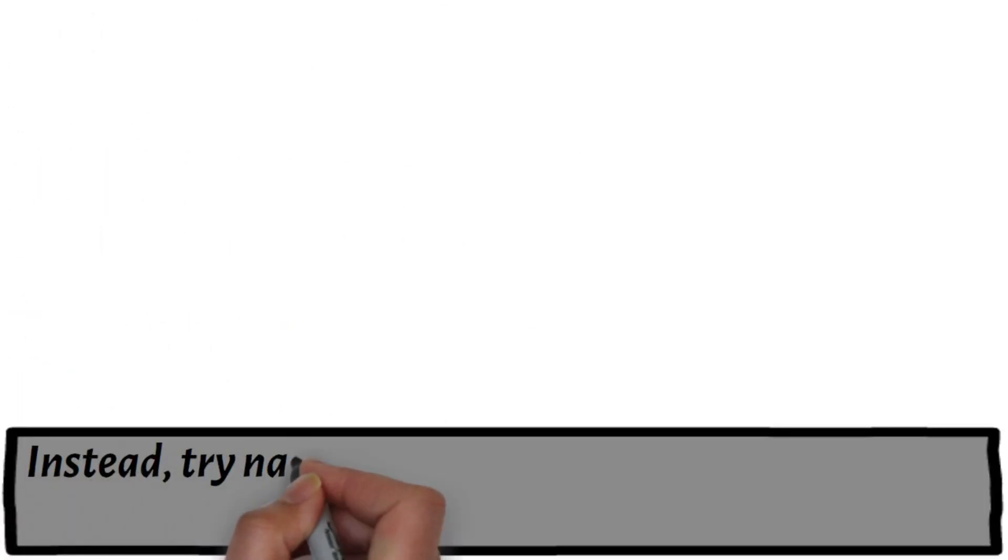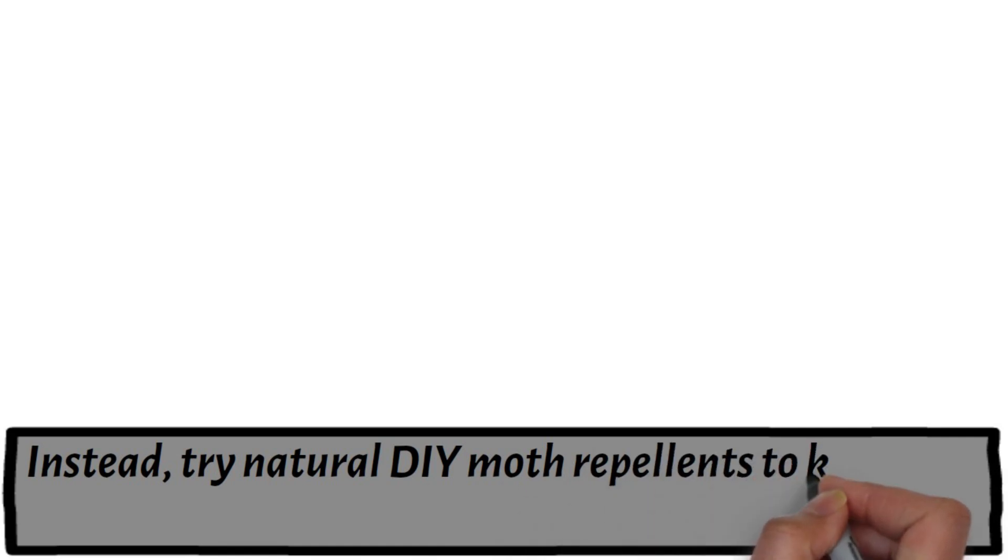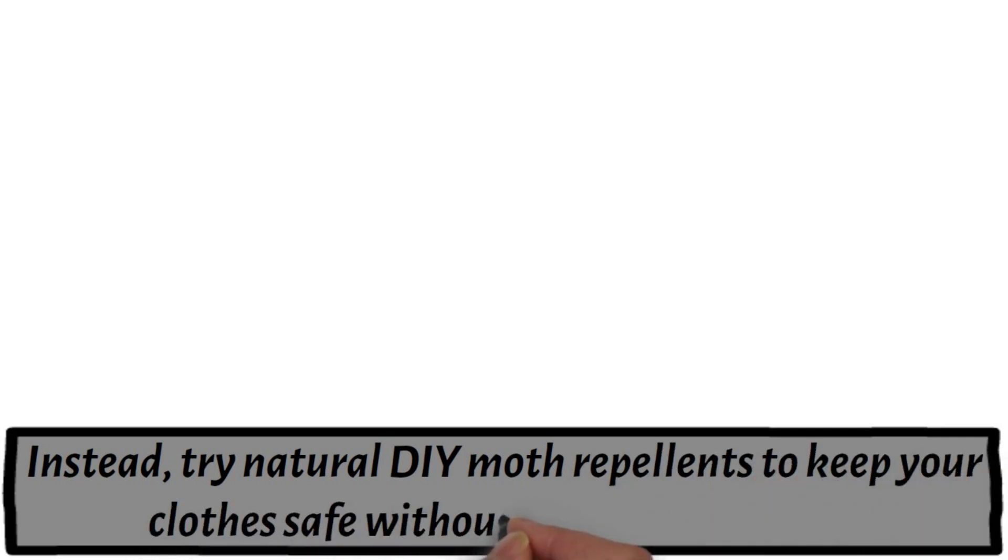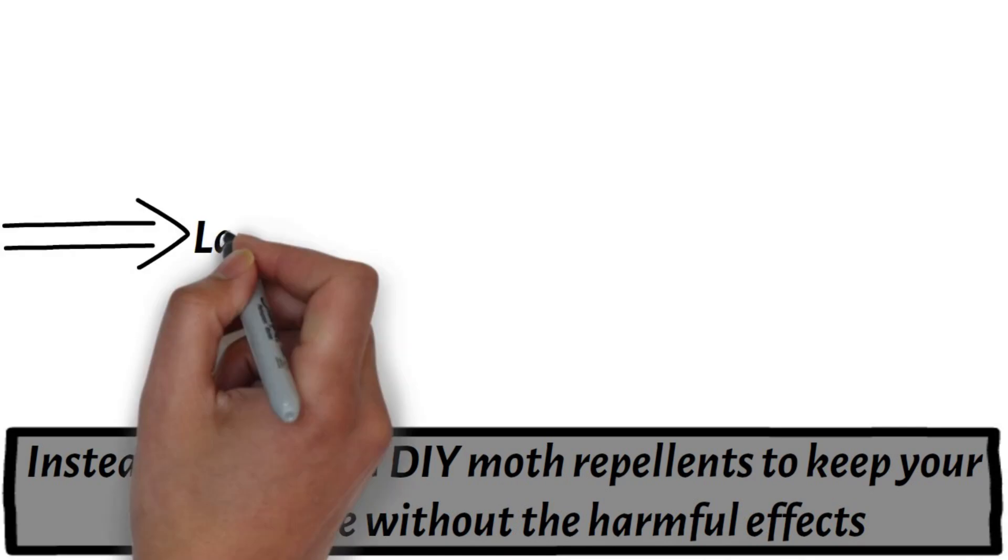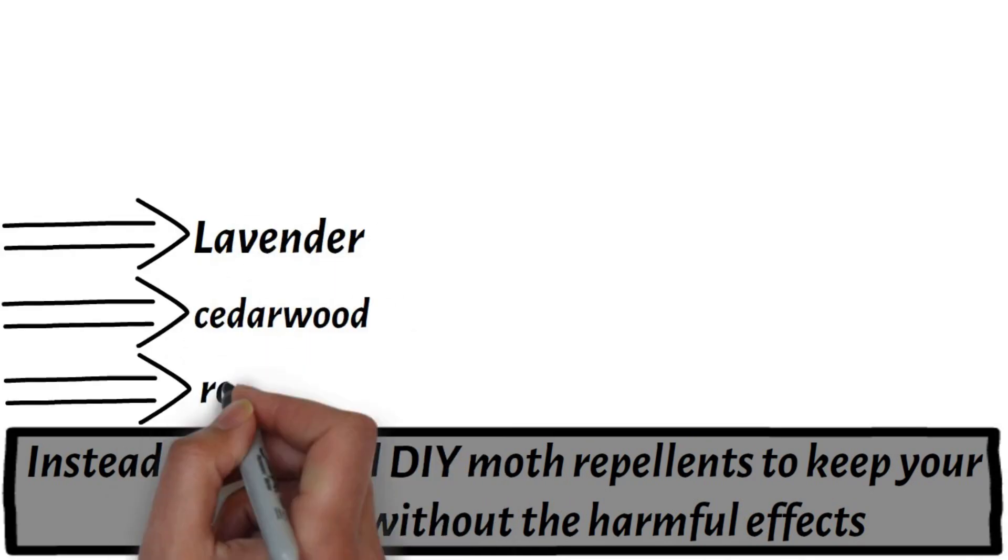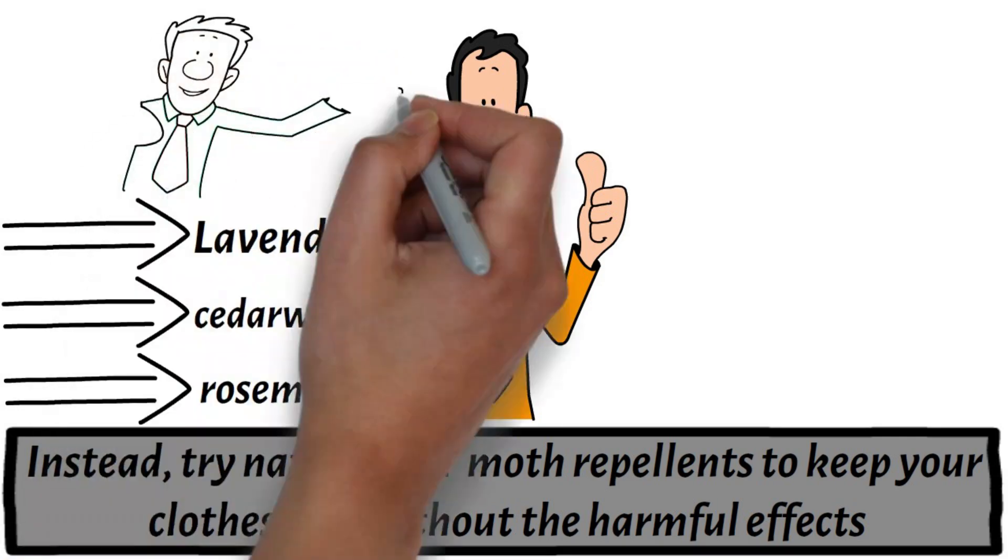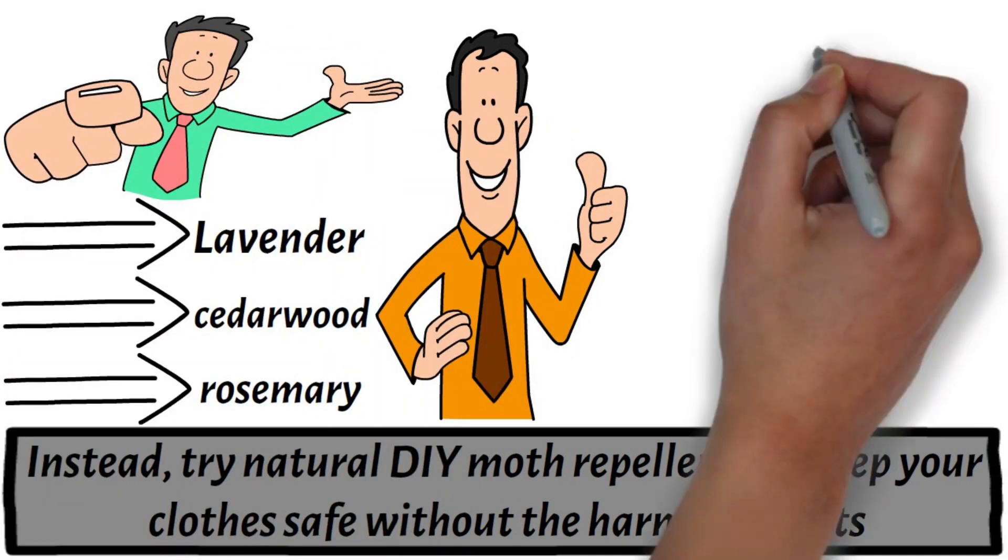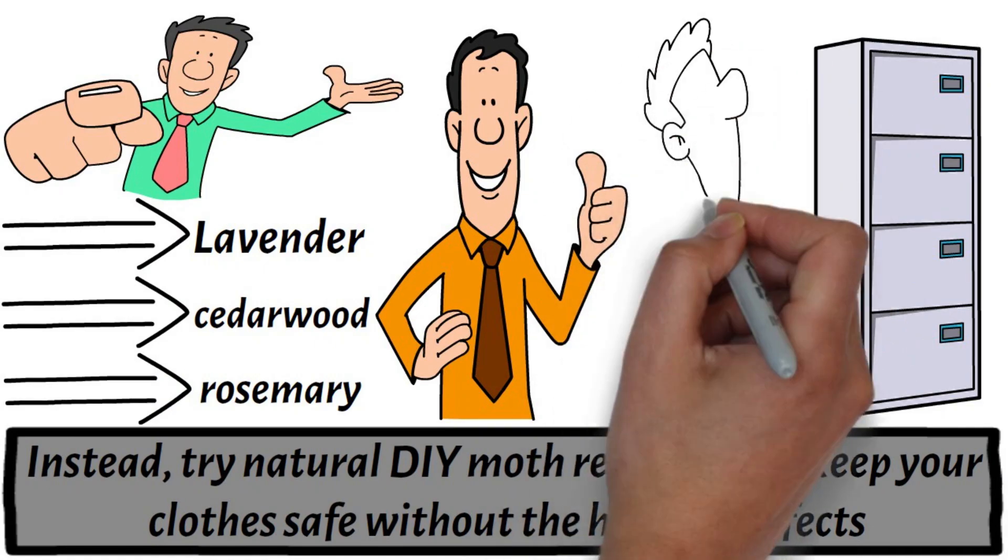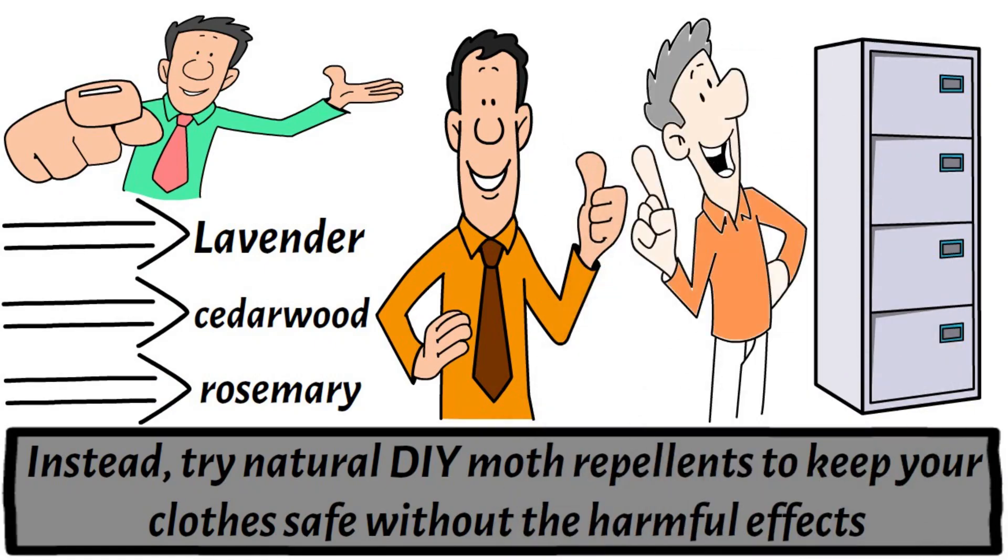Instead, try natural DIY moth repellents to keep your clothes safe without the harmful effects. Lavender, cedarwood, and rosemary are excellent natural alternatives. You can make sachets filled with these herbs to place in your closets and drawers, keeping moths at bay while leaving a pleasant scent.